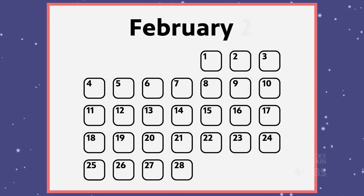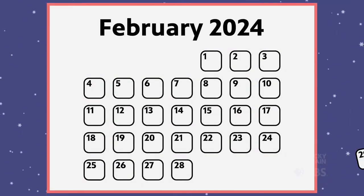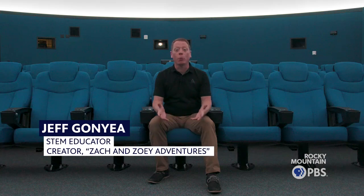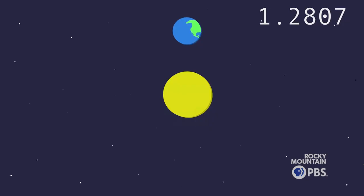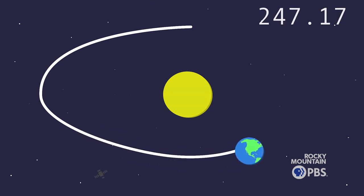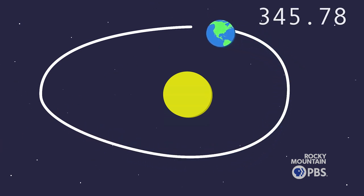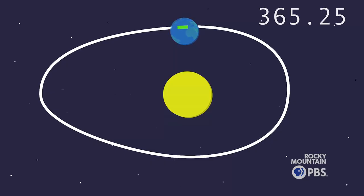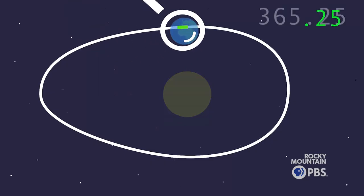Leap Day is February 29th and that happens on our calendars once every four years. So why do we have Leap Day once every four years? Why not every year? That's because of Earth's orbit around the Sun. It takes 365 and one-quarter Earth days for Earth to completely go around the Sun to make one year. So that 0.25, that quarter day — what do we do with that?